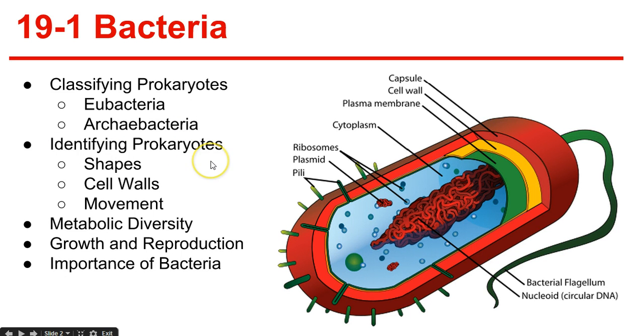Identifying prokaryotes. Prokaryotes are identified by characteristics such as shape, the chemical nature of their cell walls, the way they move, and the way they obtain energy.